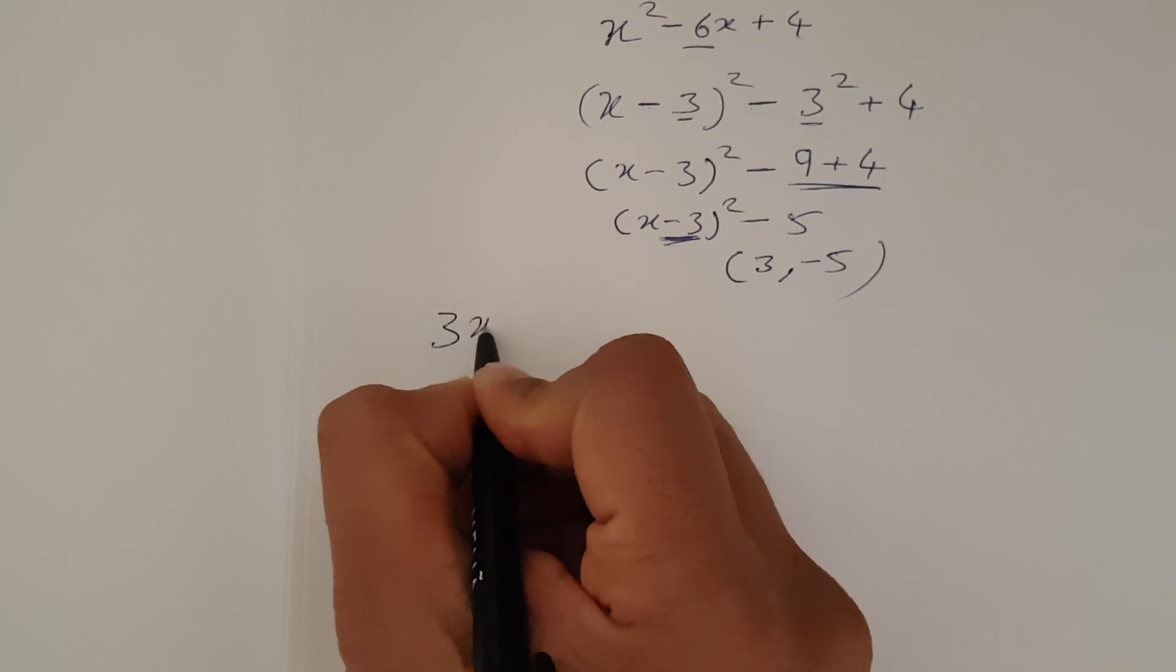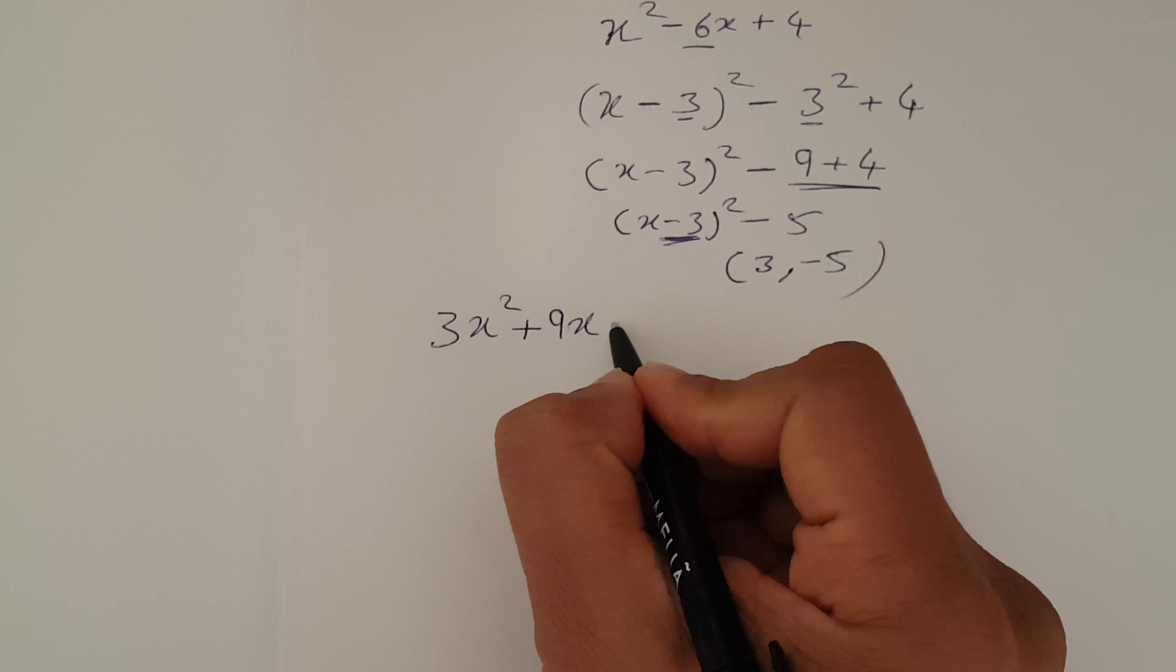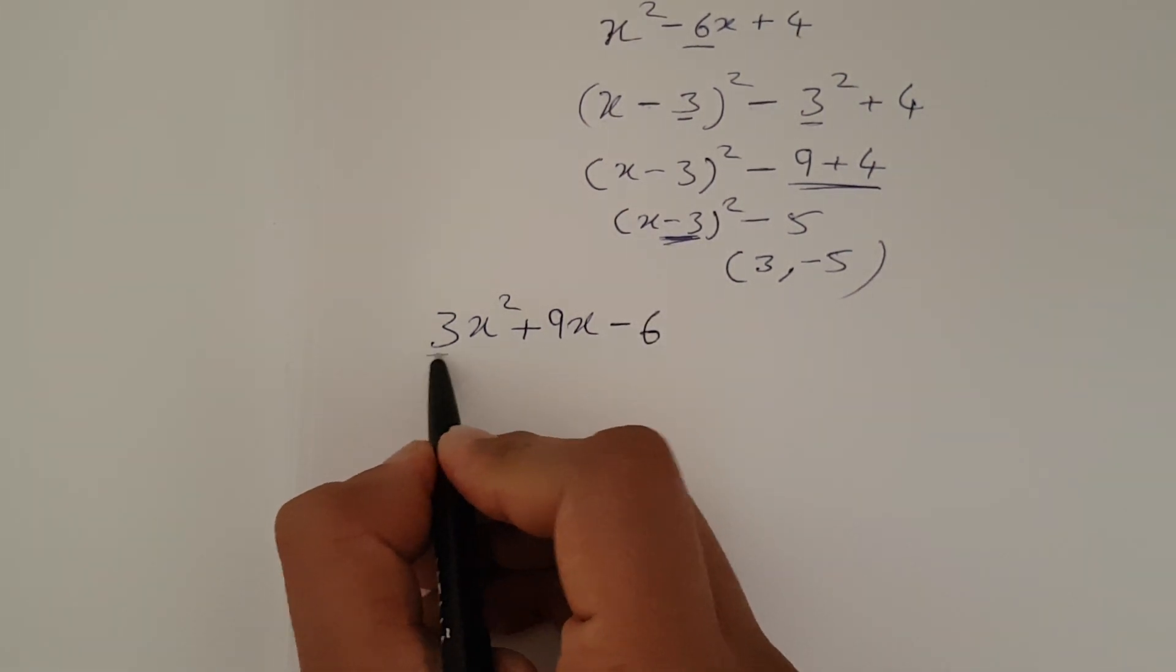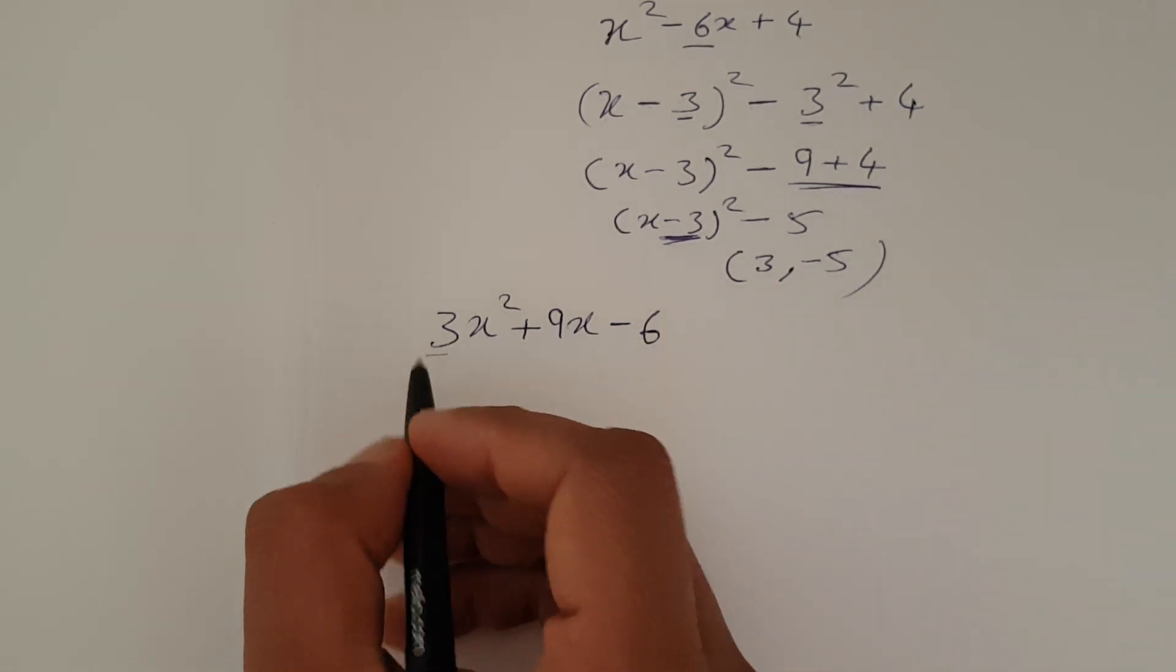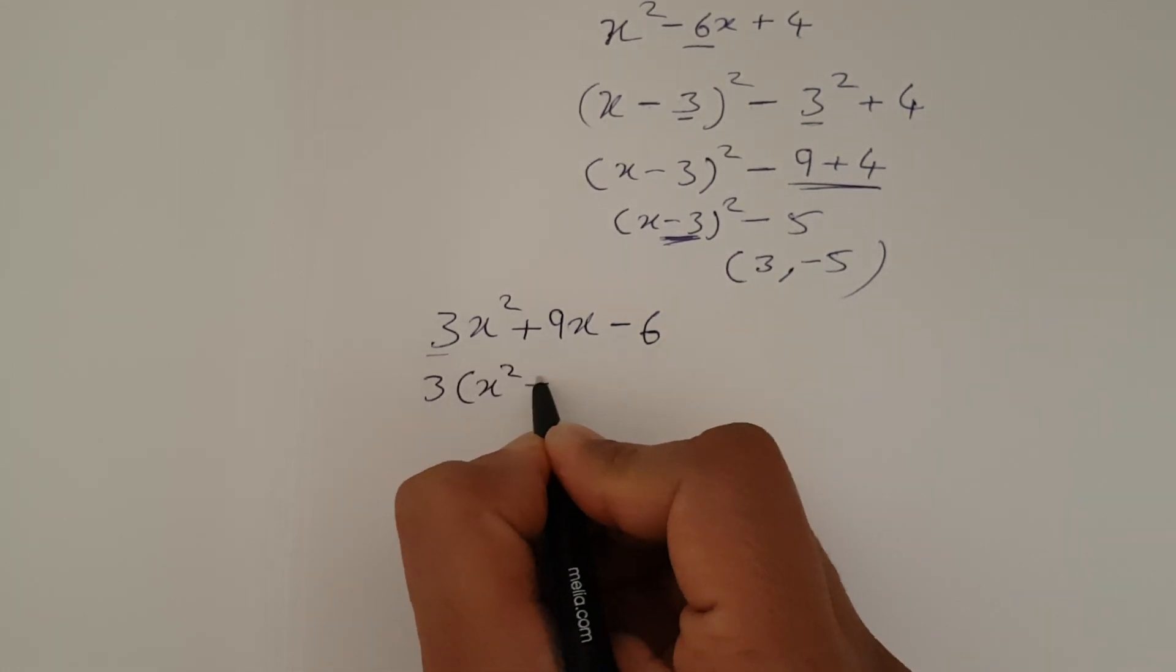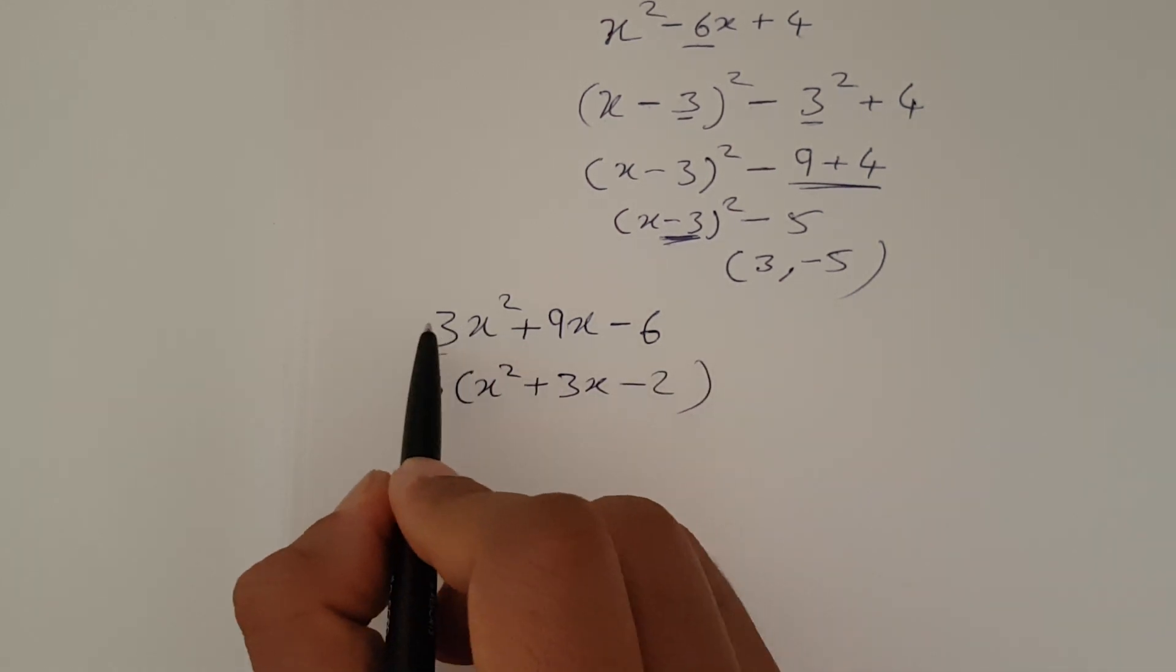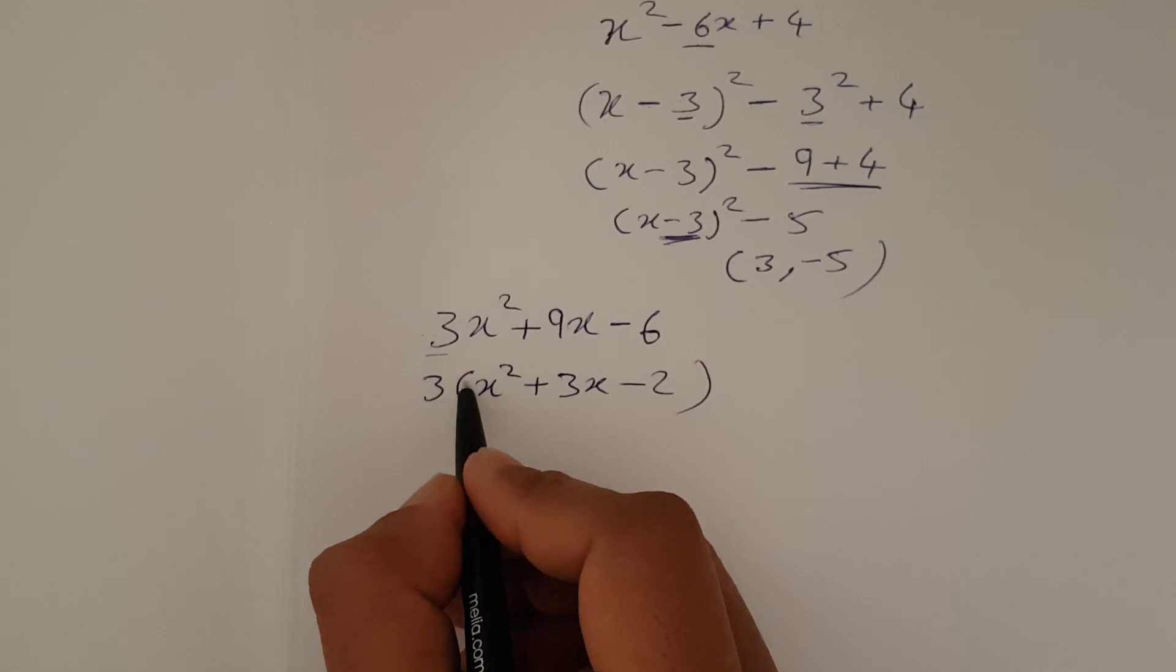Like, for example, if there's a question, 3x² + 9x - 6. If there is a number in front of x square, always take it common or divide all of them by that number. So if I'm taking it common, 3(x² + 3x - 2). I divided all 3 numbers with this 3. Factorize it, took it common.